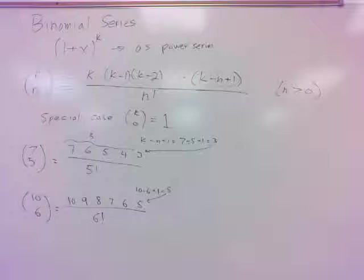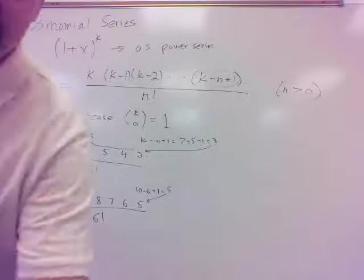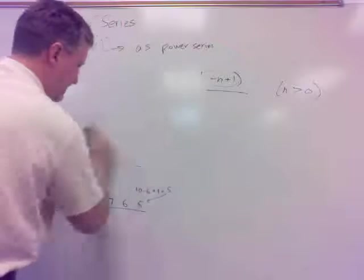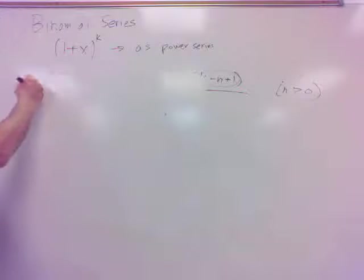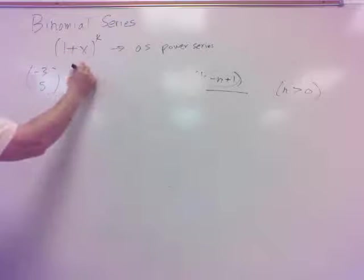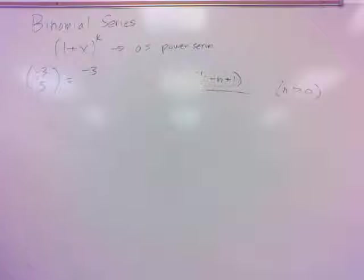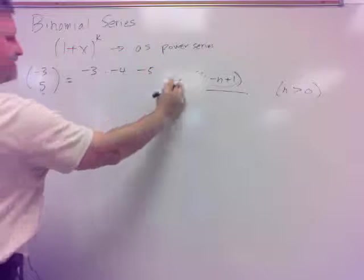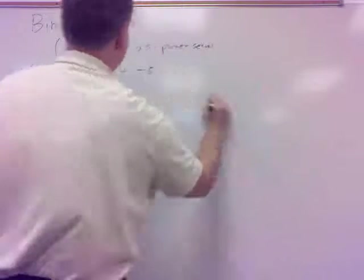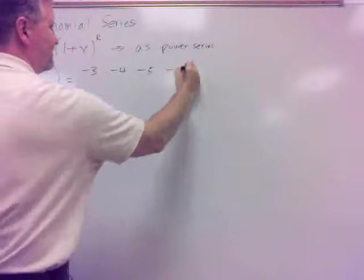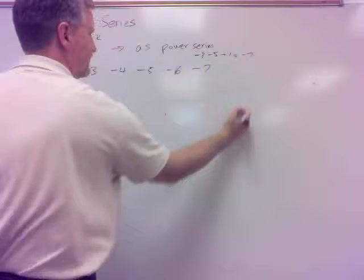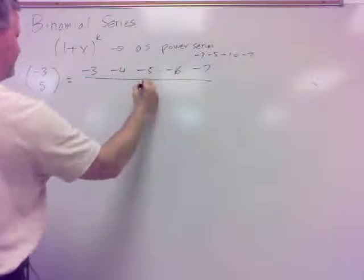Well, here's another thing with this. If I go with negative number on top, what if I have negative 3, 5? What happens there? I go minus 3, then what's the next number? Minus 4, because I'm subtracting 1, minus 5, guess where I go to? 6 and 7, yeah. Because k minus n plus 1 would be negative 7, wouldn't it? Over 5 factorial.